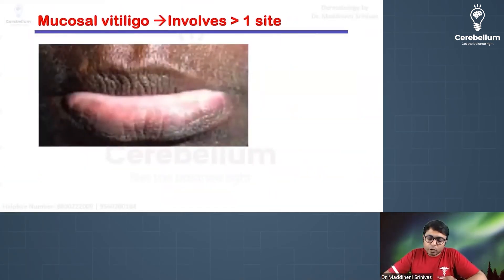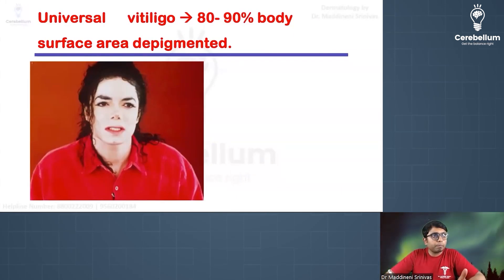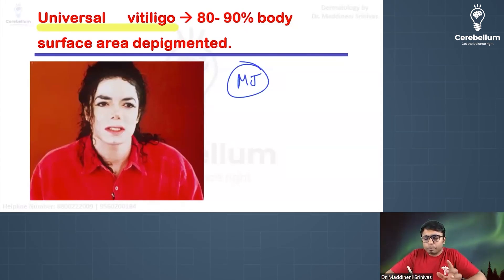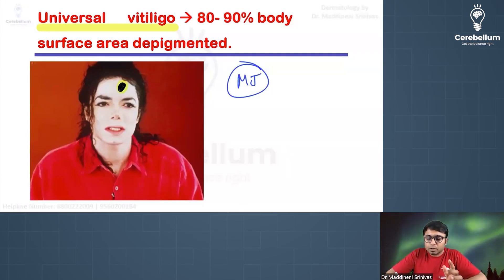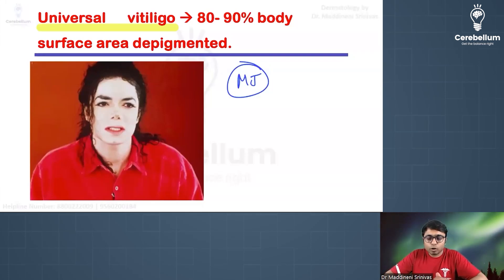In mucosal vitiligo, the mucosa shows whitish discoloration. In universal vitiligo, Michael Jackson is a well-known example — he had universal vitiligo, meaning only one or two patches of normal pigmented skin remained. Treatments exist to remove these remaining areas of normal skin, making the skin completely white.